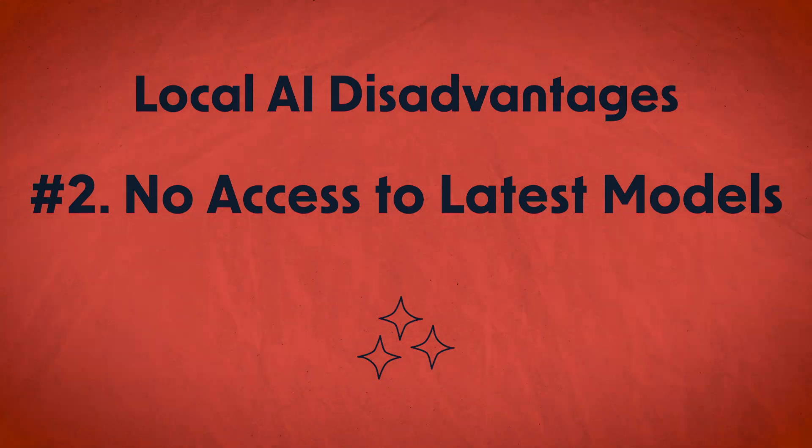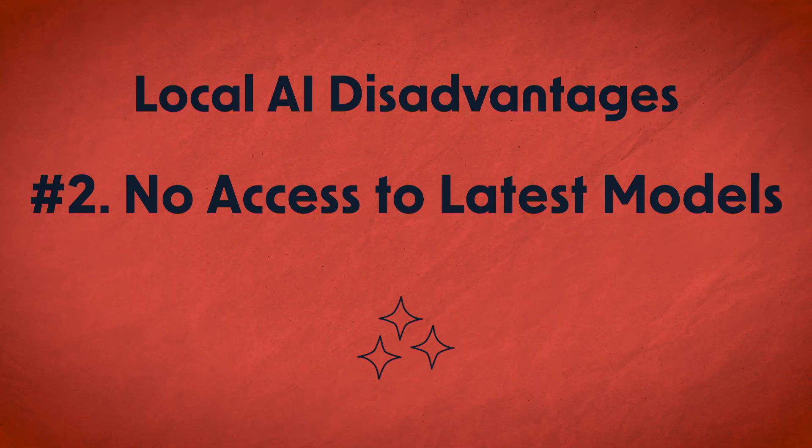The other major con is that you don't get access to the latest best models from OpenAI, Anthropic, and Google. They don't want to give these things away for free, so you have to use open-source alternatives instead. But ultimately, I wouldn't let these drawbacks dissuade you right off the bat. It's totally free to download these tools and try them out, so I'd encourage you to get some first-hand experience to decide whether or not you want to use local AI in your workflows.